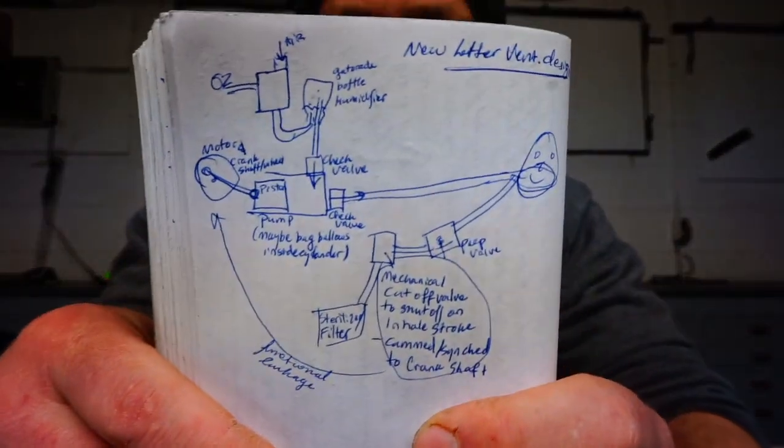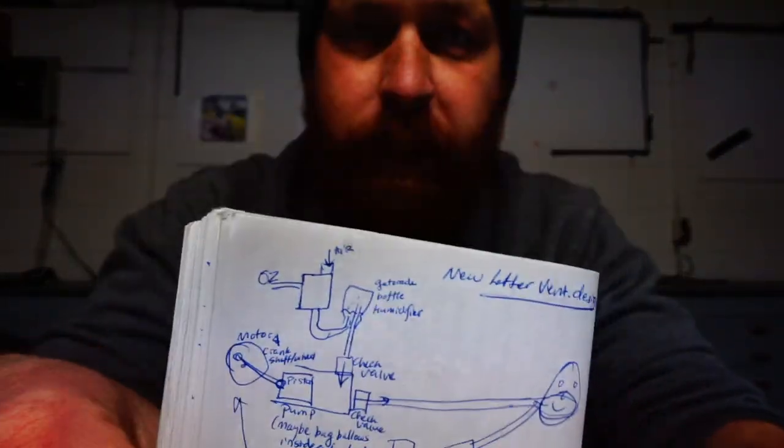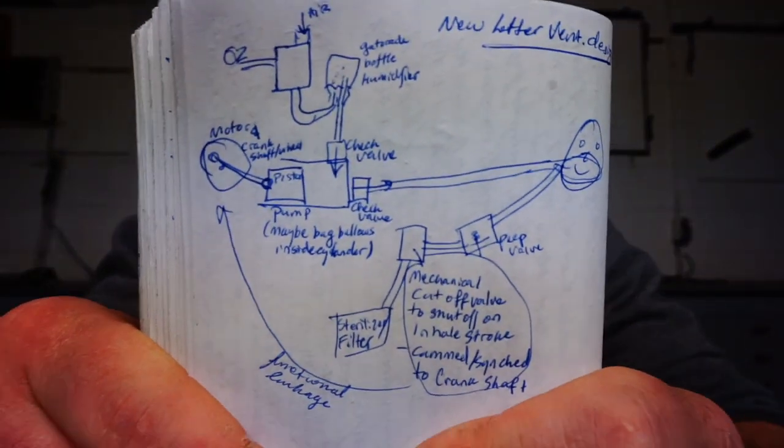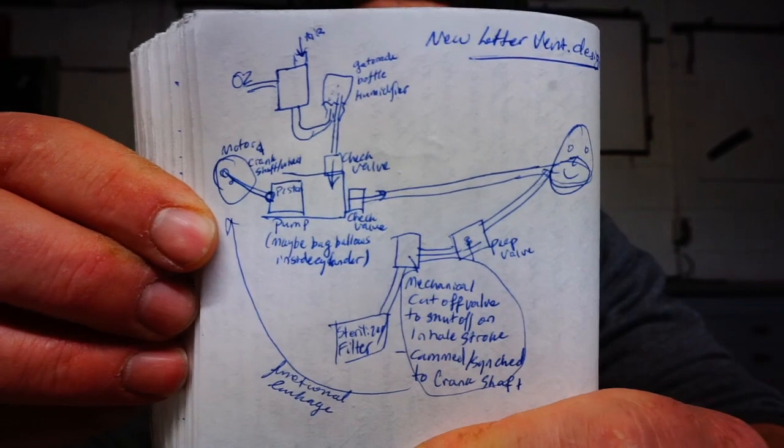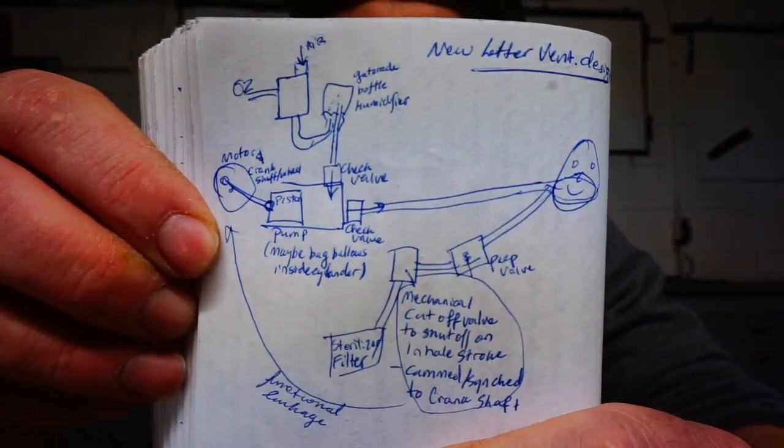So the other day I thought about a two-piston system to push positive air pressure during the exhale cycle. I came up with a much simpler version that I think is much closer to how an actual ventilator works. So this is a functional diagram of the pieces of a ventilator.